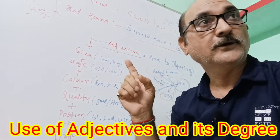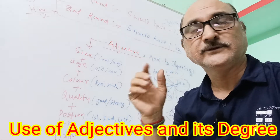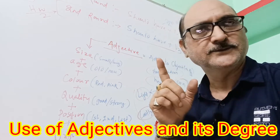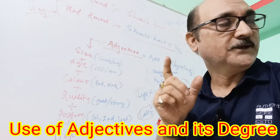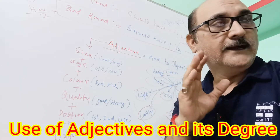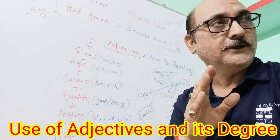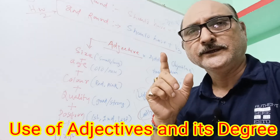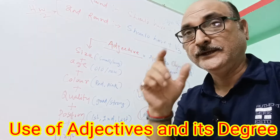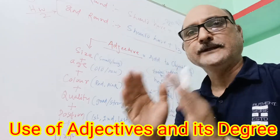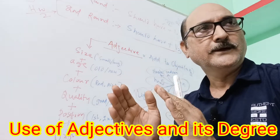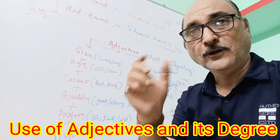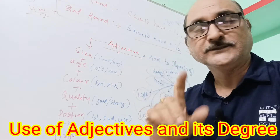In spoken English, how adjectives are used, I am going to explain you. Remember this. Here, you have to read adjective first. Second, you have to read the degree of adjective. After knowing the degree of adjective, we will go for reading the comparative analysis.